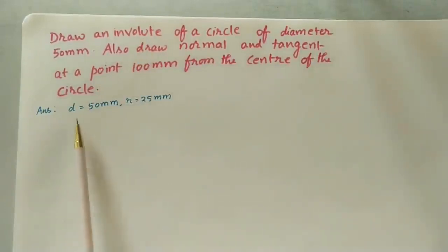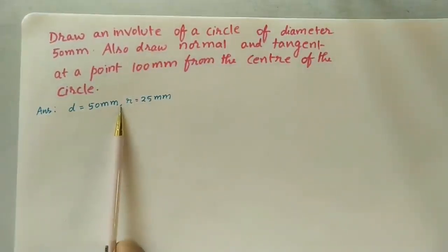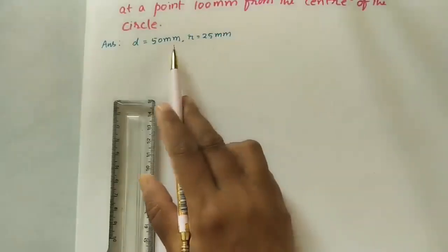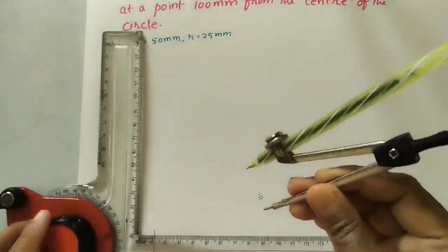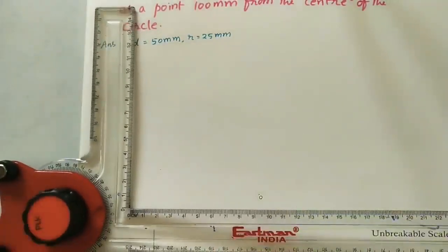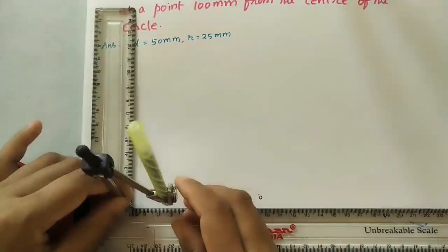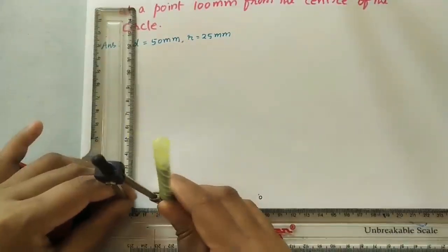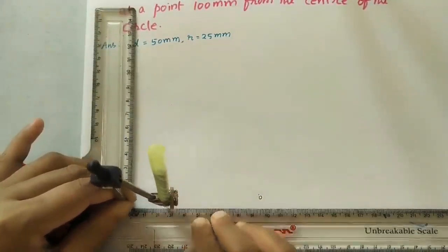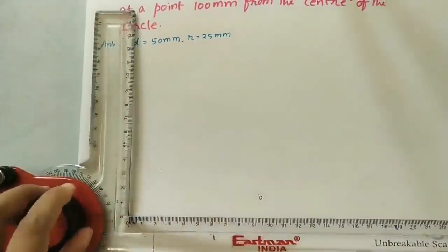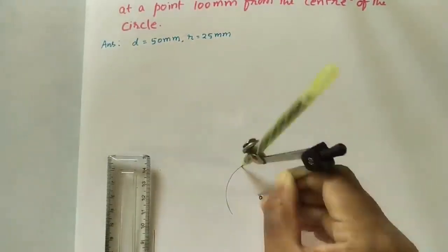The diameter of the circle is 50 mm and radius is half, that is 25 mm. By using the compass, take 25 mm radius and then take O as center, and do one circle here.